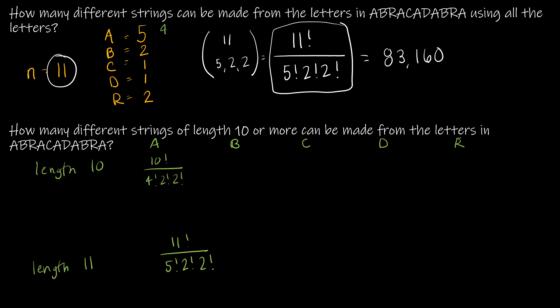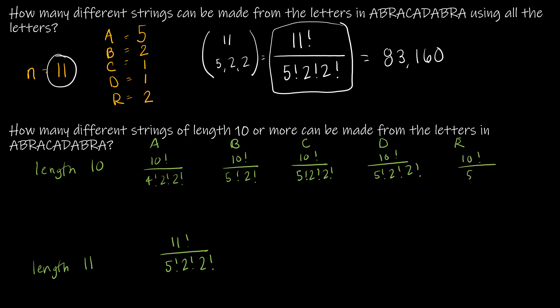If I omit an A, there are 4 A's left, so I get 10 factorial over 4 factorial times 2 factorial times 2 factorial. If I omit a B, there's just 1 B left, so I get 10 factorial over 5 factorial times 2 factorial. If I omit a C, I get 10 factorial over 5 factorial times 2 factorial times 2 factorial. If I omit a D, I get the exact same thing. And if I omit an R, I get the same result as omitting a B: 10 factorial over 5 factorial times 2 factorial.